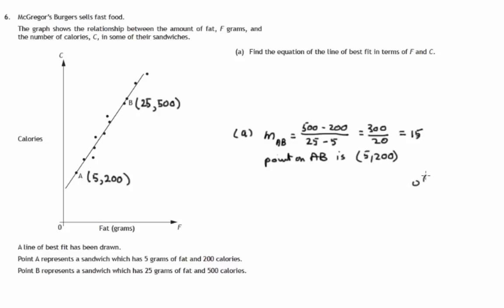And normally your thinking would be, if you have gradient M and a point AB, then your equation is Y minus B equals M times X minus A. So we've got a bit of thinking to do here, because our X is an F and our Y is a C. Everything else is okay.